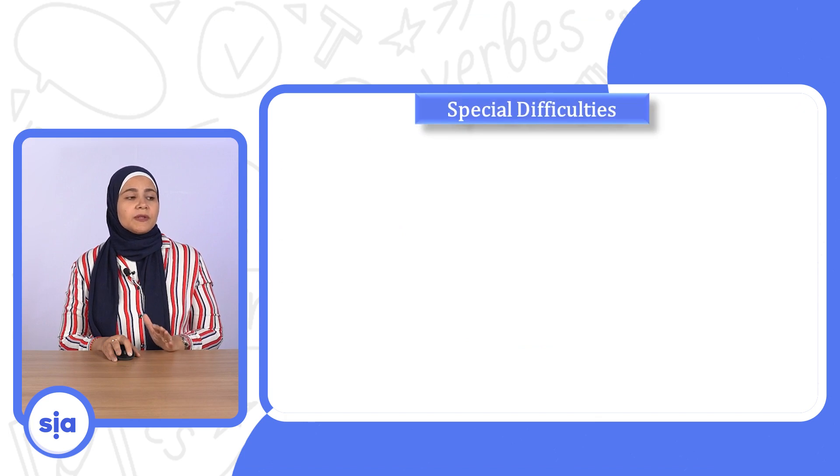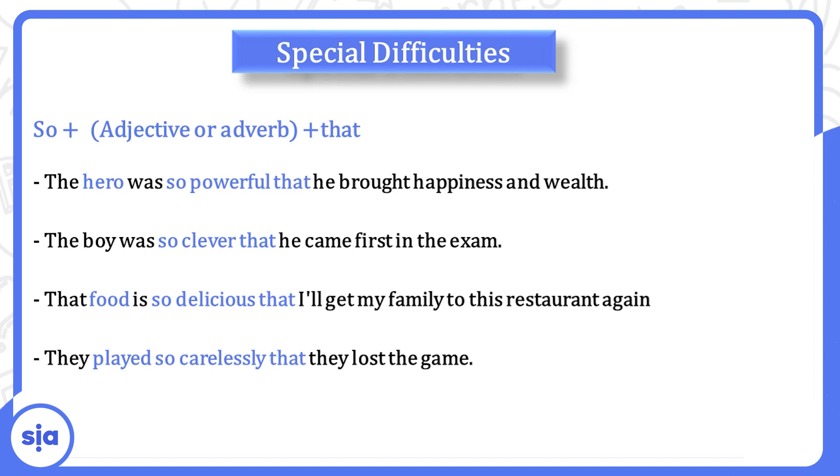Now let's move to the special difficulties. لو استخدمت so معاها adjective صفة أو adverb ظرف مع that. خلينا نشوف بنستخدمها ازاي. The hero was so powerful that he brought happiness and wealth. البطل كان قوي جدا لدرجة انه حصل على الثروة. The boy was so clever that he came first in the exam. That food is so delicious that I'll get my family to this restaurant again. They played so carelessly that they lost the game.